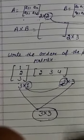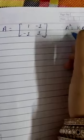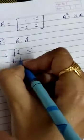Now we will solve a matrix multiplication question. Suppose they give you matrix A equal to [1, -1; -1, 1] and ask you to find the value of k if A² = kA. First, we need to find the value of A². A² means matrix A multiplied by matrix A. So we write A = [1, -1; -1, 1] multiplied by A = [1, -1; -1, 1]. Both matrices have order 2×2.